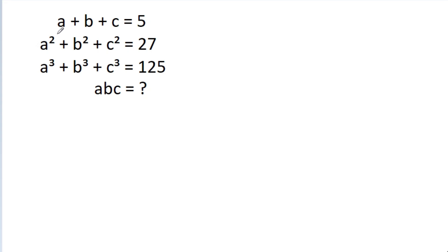We have given that a plus b plus c is equal to 5, and a square plus b square plus c square is equal to 27, and a cube plus b cube plus c cube is equal to 125. Then we have to find the value of a, b, c.